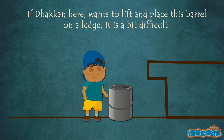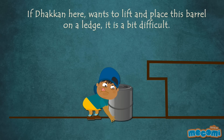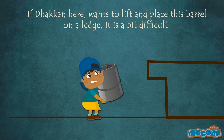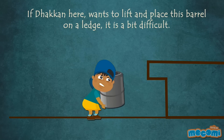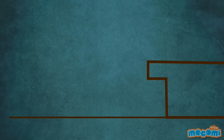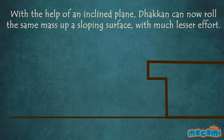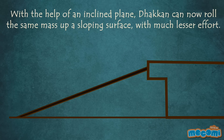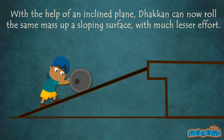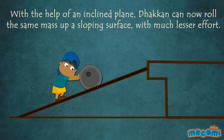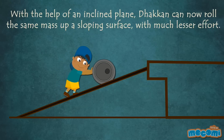If Dhakkan here wants to lift and place this barrel on a ledge, it is a bit difficult. With the help of an inclined plane, Dhakkan can now roll the same mass up a sloping surface with much less effort.